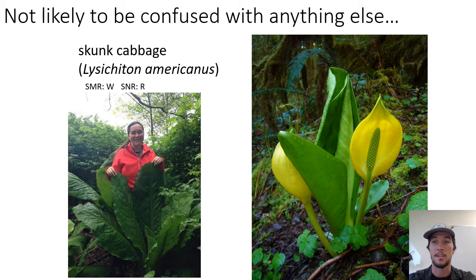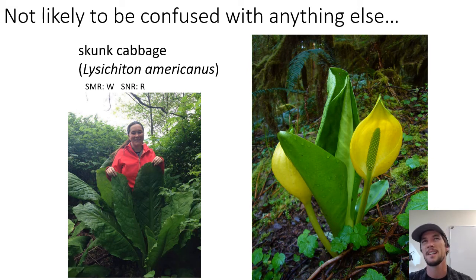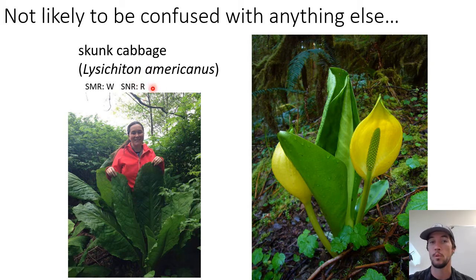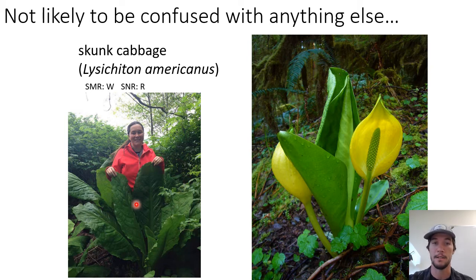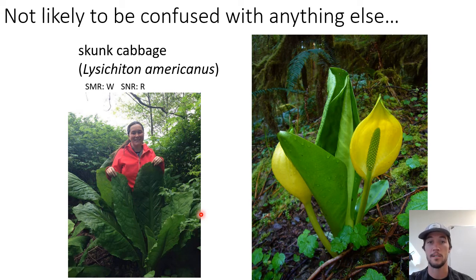First off, the thing you're not likely to confuse with anything else: the great and terrible skunk cabbage. This is a super unique-looking plant you find in the forest in really muddy areas. It really likes wet, damp spots, but you don't find it so much in bogs because it still wants rich soil — bogs have really poor soils. Skunk cabbage likes damp forests where you still get some rich soil. Check out this photo: compared to the person in it — a normal-sized human being — you can see how enormous the leaf is.